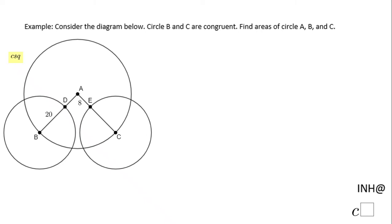Welcome back. I need help at C Square. In this example we have a diagram with three circles: circle A, B, and C. You'll notice circle B and C are congruent - that is very important.